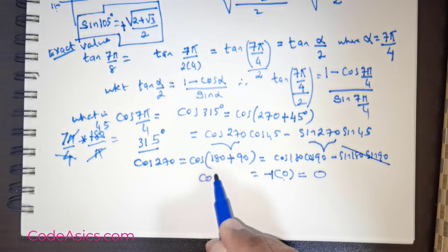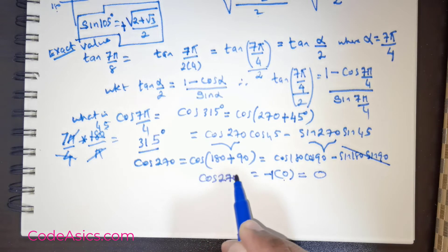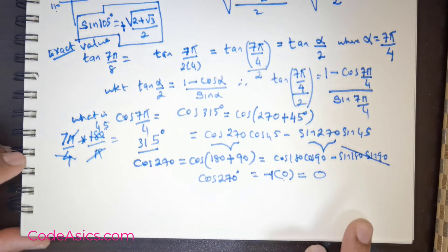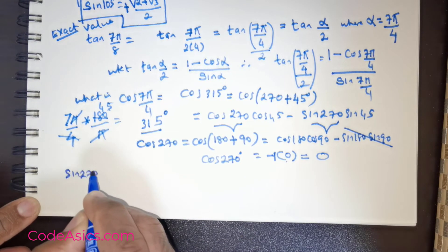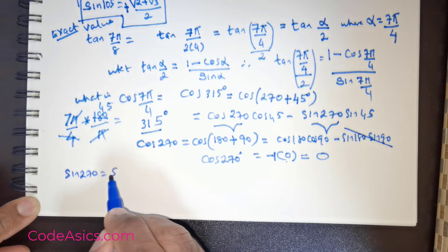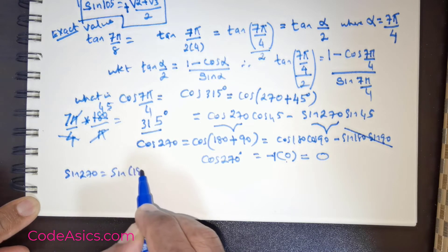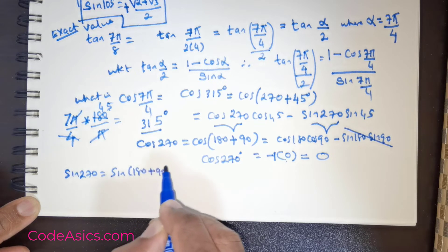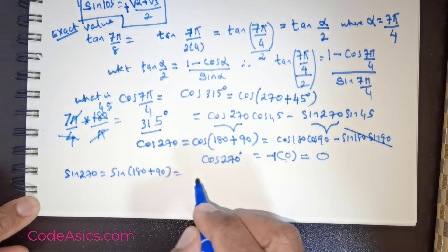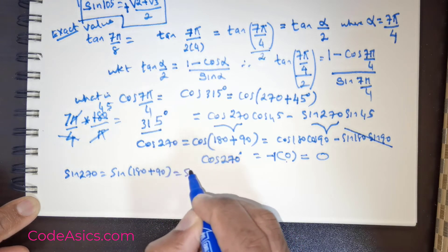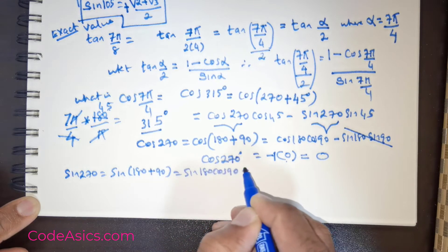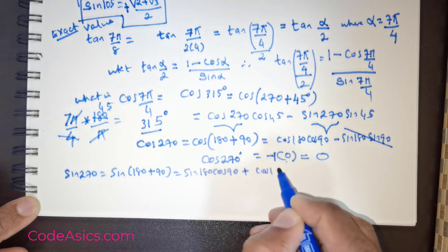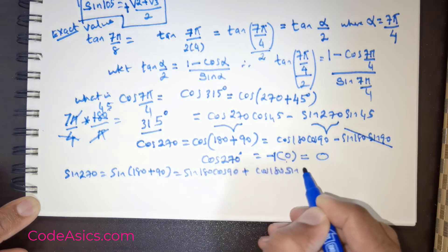So now the all-important question is what is the value of sin 270? I would like to rewrite sin 270 as sin 180 plus 90, which when applying sin of A plus B formula gives me sin 180 cos 90 plus cos 180 sin 90.